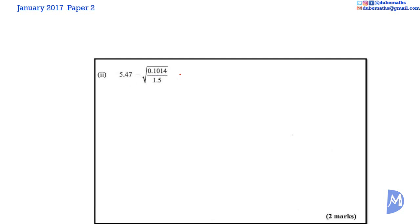We need to know that this is exactly the same as 5.47 minus, in brackets, 0.1014 over 1.5 to the power of a half. I put it this way to make sure you understand that we need to work out the brackets first and then find the square root.